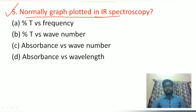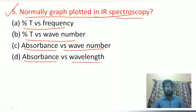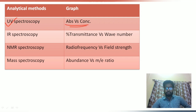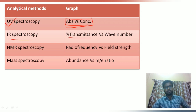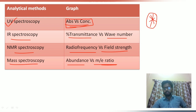The fifth question: the graph normally plotted in IR spectroscopy is: percentage transmittance versus frequency/wave number, absorbance versus wave number, or absorbance versus wavelength. The graph plotted in IR spectroscopy is always percentage transmittance versus wave number. In NMR, radio frequency versus field strength is plotted. In mass spectroscopy, abundance versus m/z ratio is plotted. This is frequently asked in different examinations.